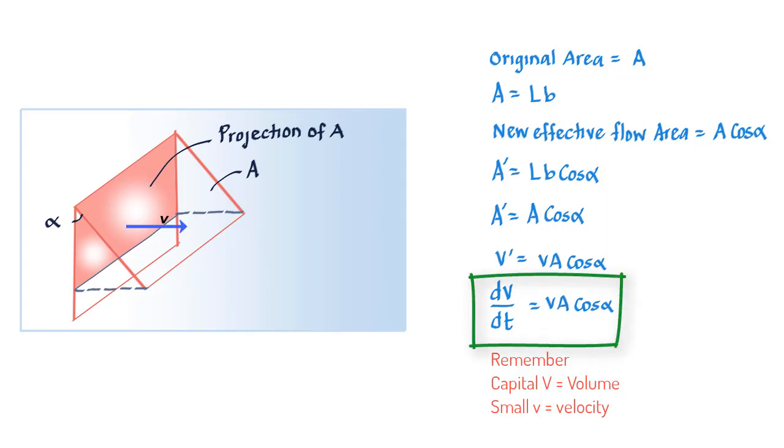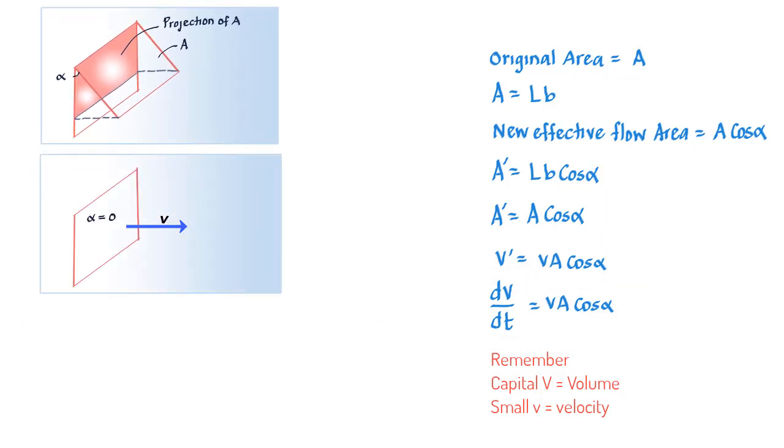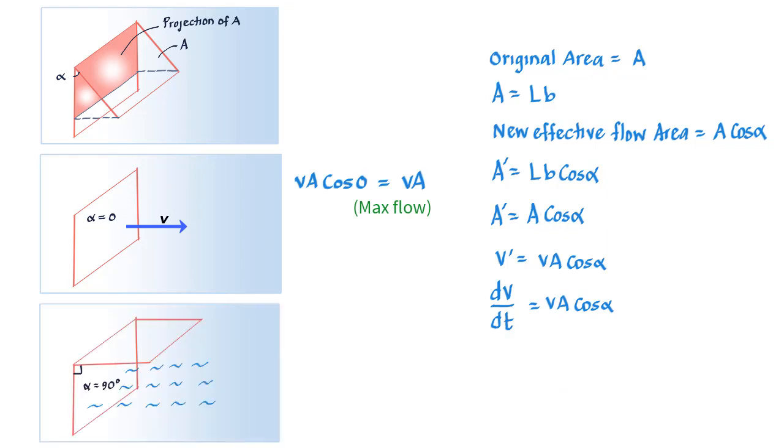Using this formula, you can see that the flow rate is maximum when alpha is 0, since cos alpha becomes 1. And if you make alpha equal to 90 degrees, cos alpha becomes 0 and dV/dt equals 0, which is true since the water is just running parallel to the area rather than going through it.